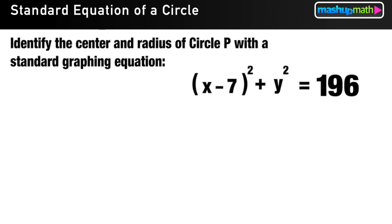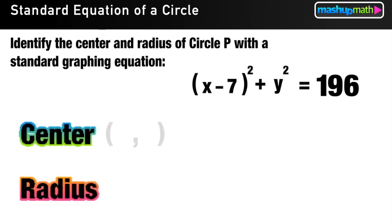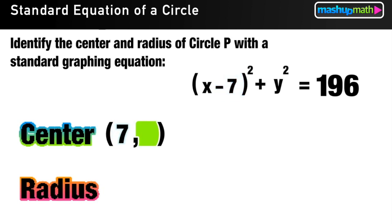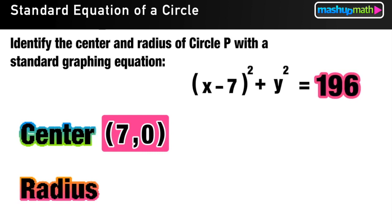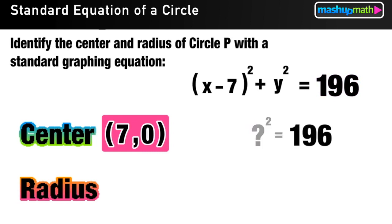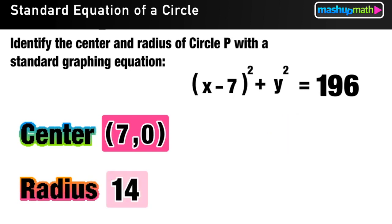This last example is the reverse of what we've been doing. Given the equation of a circle, we want to identify the center and radius. The X coordinate of the center is the H value with a sign change, so negative 7 in the formula means the center X coordinate is positive 7. For the Y coordinate, there is no value shown, so it is 0 — meaning the center is at (7, 0). The 196 value represents R squared, so we take the square root of 196, which equals 14. That is the length of the radius of circle P.